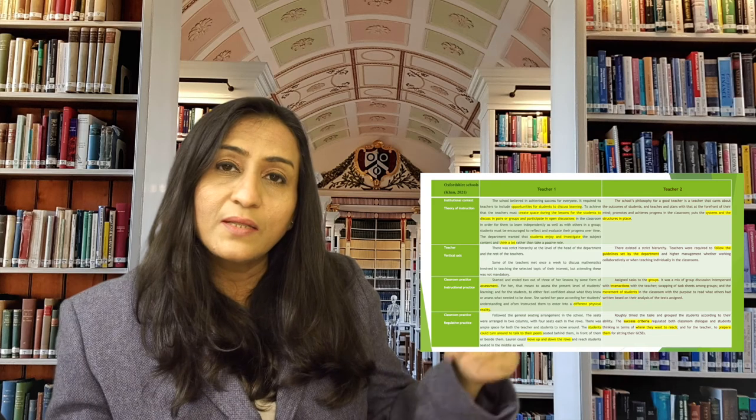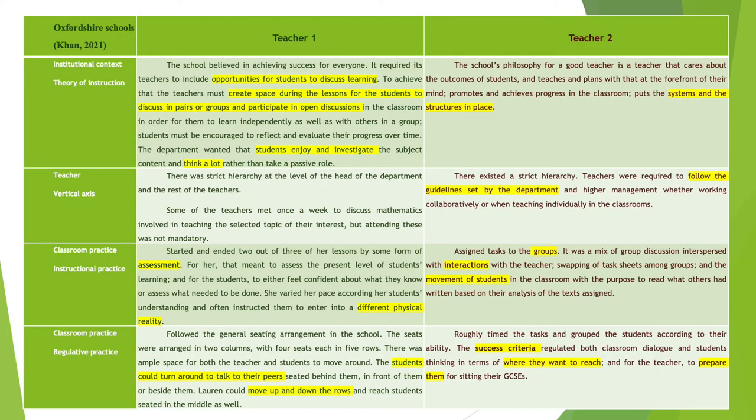For example, a student who wanted to work towards category B would have certain requirements to meet, and the teacher would help that student reach that level. In school two, where structures were highly valued, there existed a strict hierarchy. Teachers were required to follow the guidelines set by the department and higher management, whether they were working collaboratively or teaching individually in the classrooms.